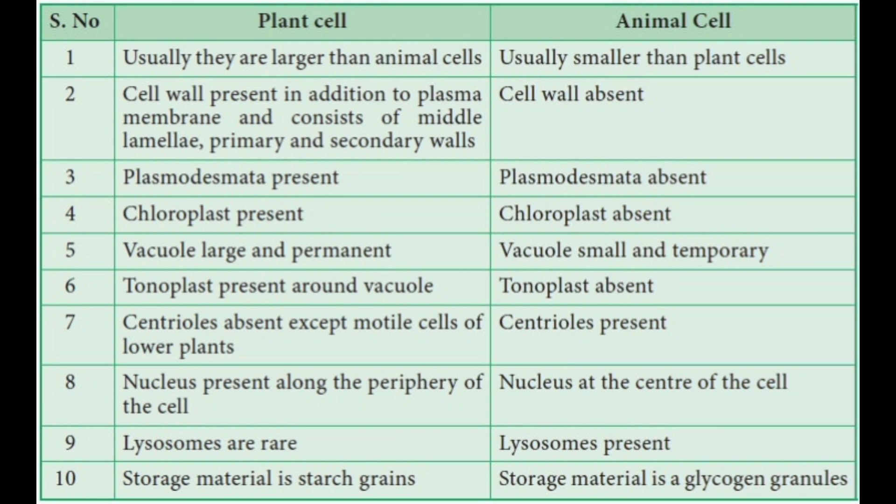Vacuoles are large and permanent in plant cells, but small and temporary in animal cells. The tonoplast is present around the vacuole in plant cells, while it is completely absent in animal cells. Centrioles are absent in plant cells, except in the motile cells of lower plants, but centrioles are present in animal cells. The nucleus is present along the periphery of the cell in plant cells and lysosomes are rare, whereas in animal cells the nucleus is at the center and lysosomes are present.